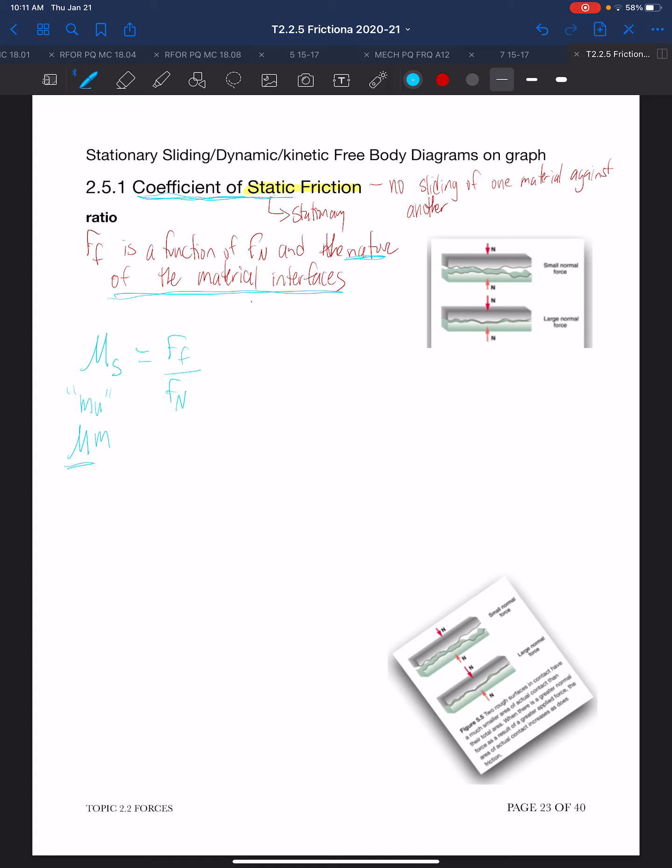If we look at the way this behaves, this mu static is a constant. If I increase the force normal, I must increase the force of friction to maintain the same constant. Force of friction is measured in newtons, force normal is measured in newtons. Algebraically, they cancel, which means there are no units to coefficient of static friction.